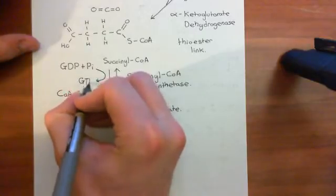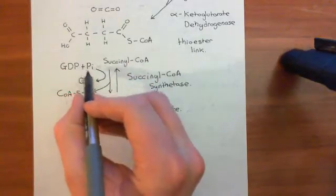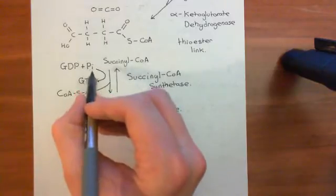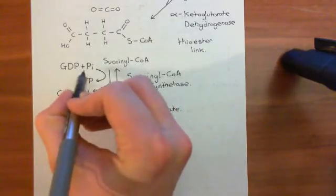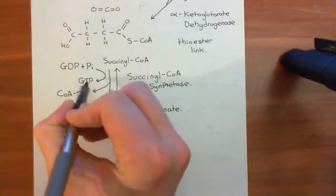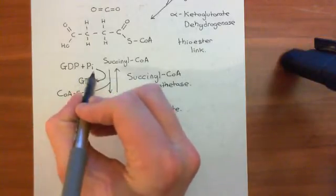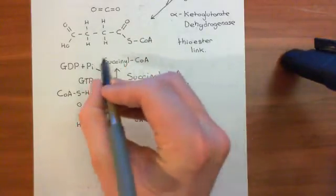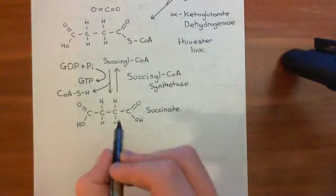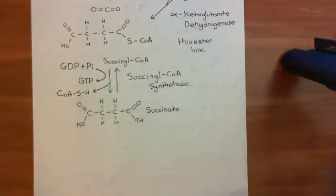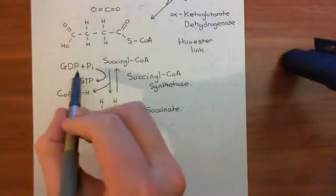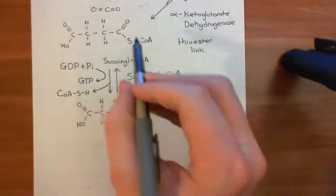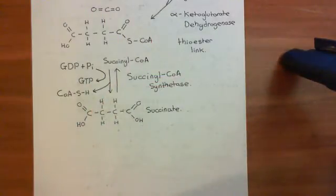Now, usually when you combine guanosine diphosphate with an inorganic phosphate to create guanosine triphosphate, that reaction produces water — it's a condensation reaction. That water that you produce will then be used to split the succinyl coenzyme A molecule apart into succinic acid and the coenzyme A. So you're going to use the condensation of guanosine diphosphate and inorganic phosphate to hydrolyze succinyl coenzyme A into succinic acid and coenzyme A.